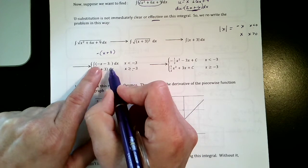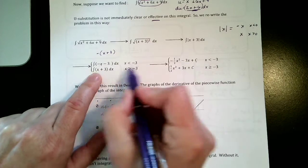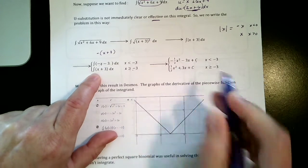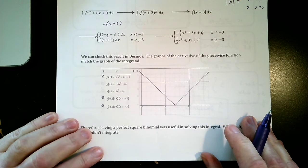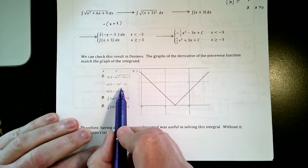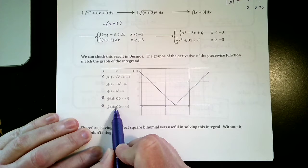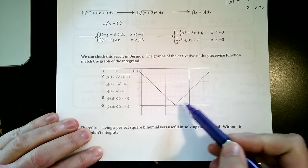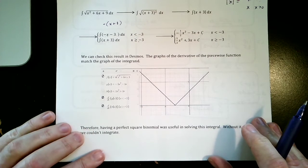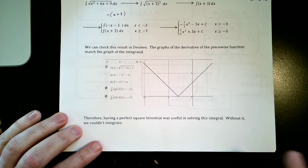Then you can integrate each piece: -1/2 x² - 3x + c, and positive 1/2 x² + 3x + c. I actually went and graphed all of this in Desmos. Here's the original function that we were trying to integrate, here's the two integrals that we got, and then the derivative of each of those two integrals and it matches up—the dotted lines match up on top of the original function.